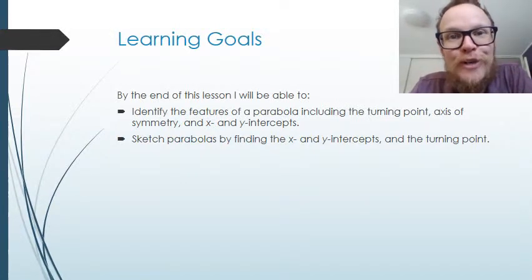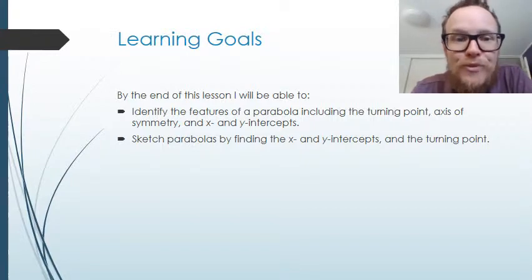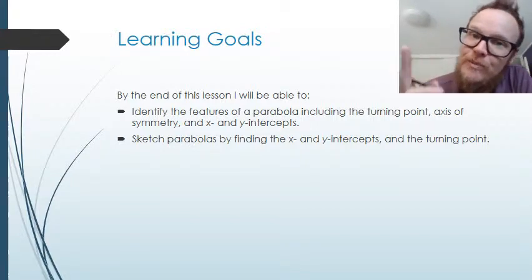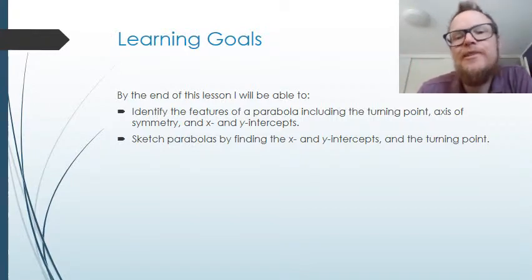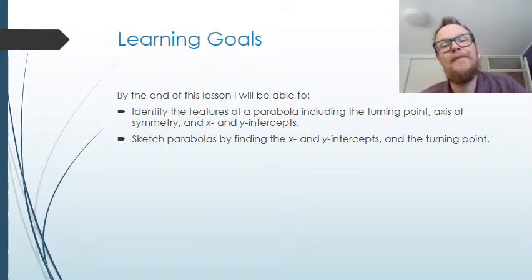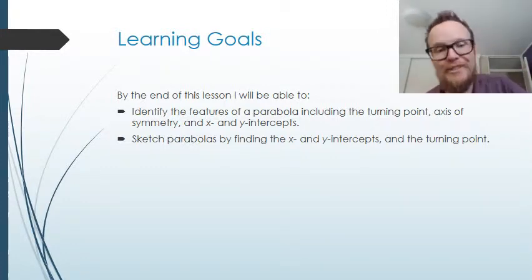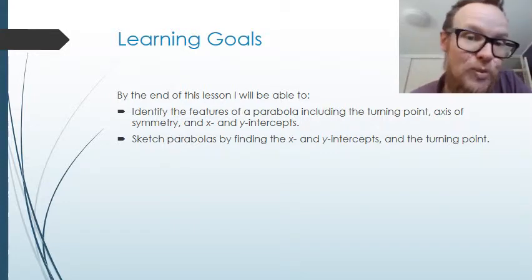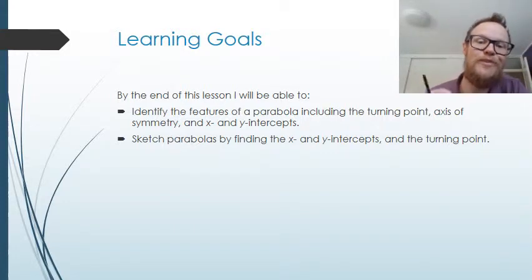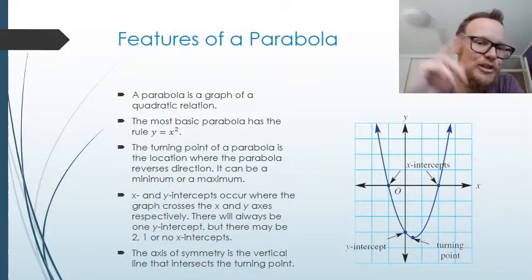Good day! Today we're looking at sketching parabolas using factorization. By the end of this lesson, we're going to be able to identify key features of a parabola: turning point, axis of symmetry, and XY intercepts. We're also going to be able to sketch parabolas by finding XY intercepts and the turning point. Let's go.